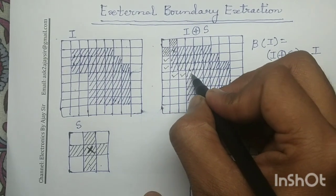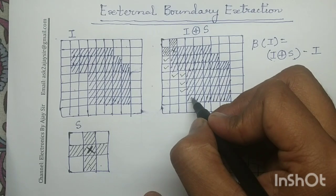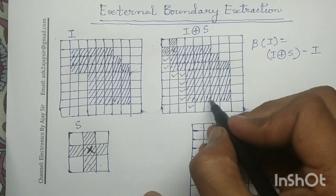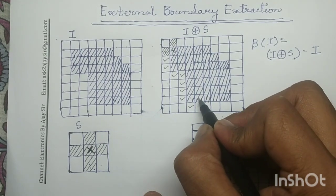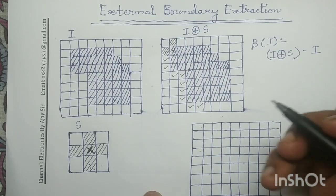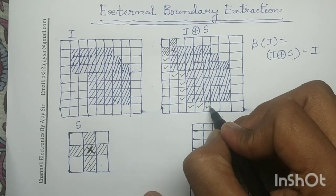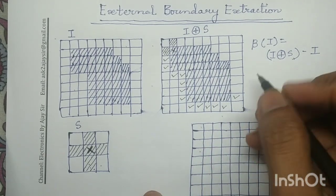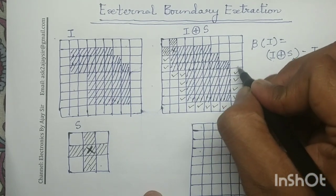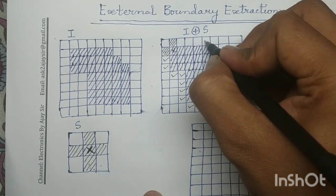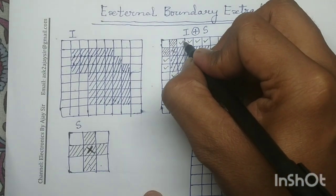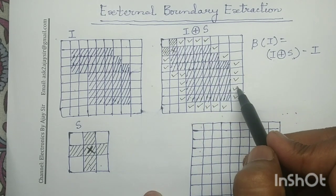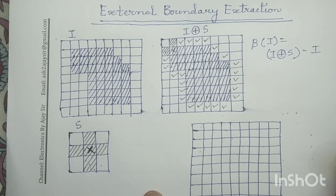At each position, after performing the dilation operation, the neighboring pixels become logic 1. If you place the center of the structuring element at different positions, pixels at those neighboring locations become logic 1. These are the pixels which, after performing the dilation operation, were earlier part of the background but now become part of the object pixels.